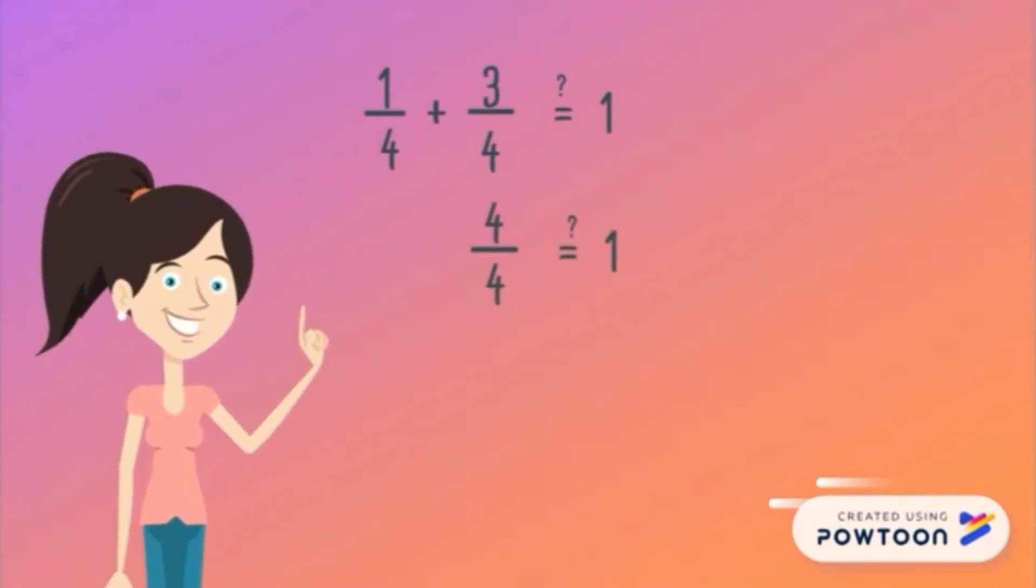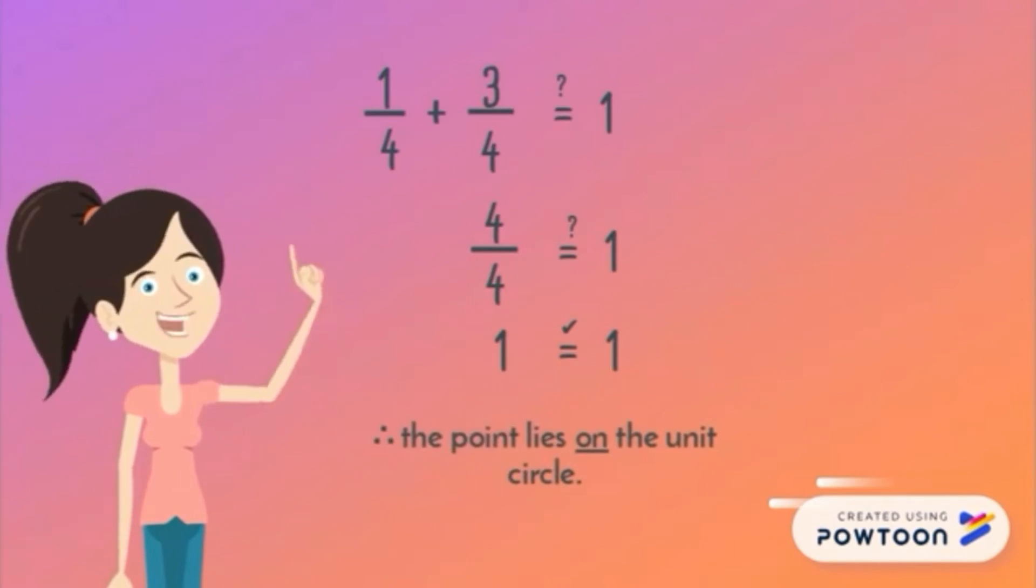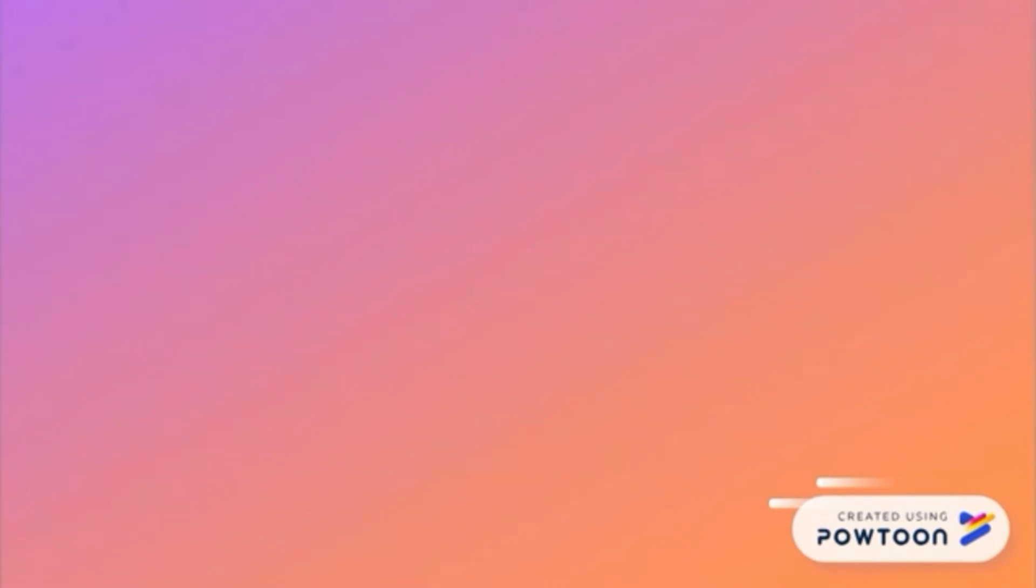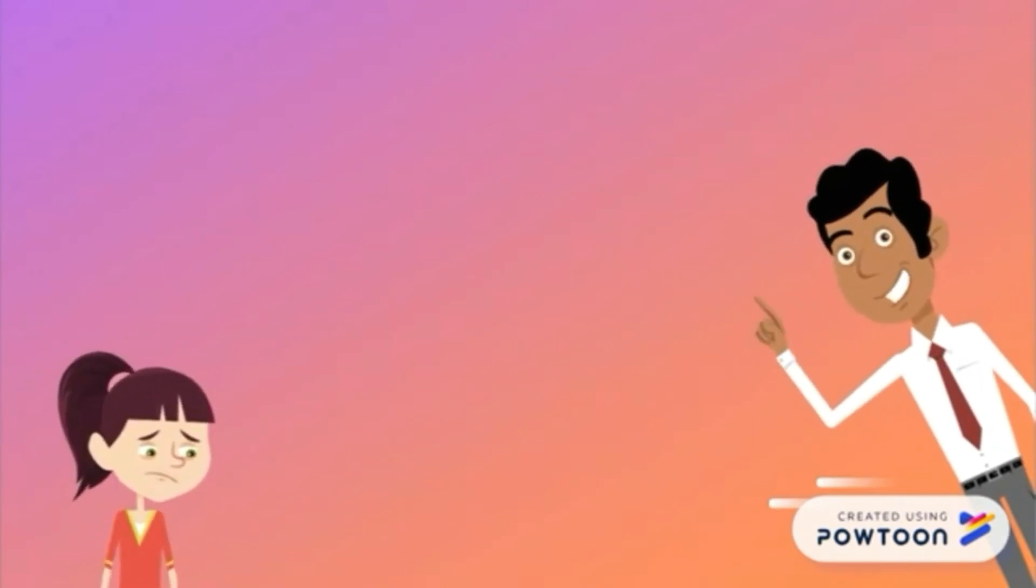But what if one of the values are missing, and you are given the point which is on the unit circle? Easy! But first, let's be guided with this plane.